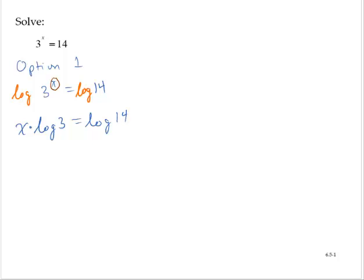Now, the log of 3 is just a number. And so what I would do here is divide both sides by the log of 3. And we find that x is equal to the log of 14 divided by the log of 3.